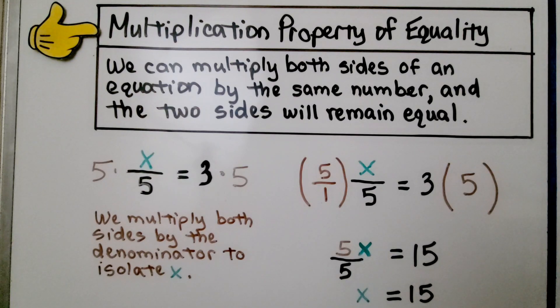And 5 over 5, same numerator and denominator, that makes a 1. We have 1x, but we don't write the 1 as a coefficient, do we? x is equal to 15.